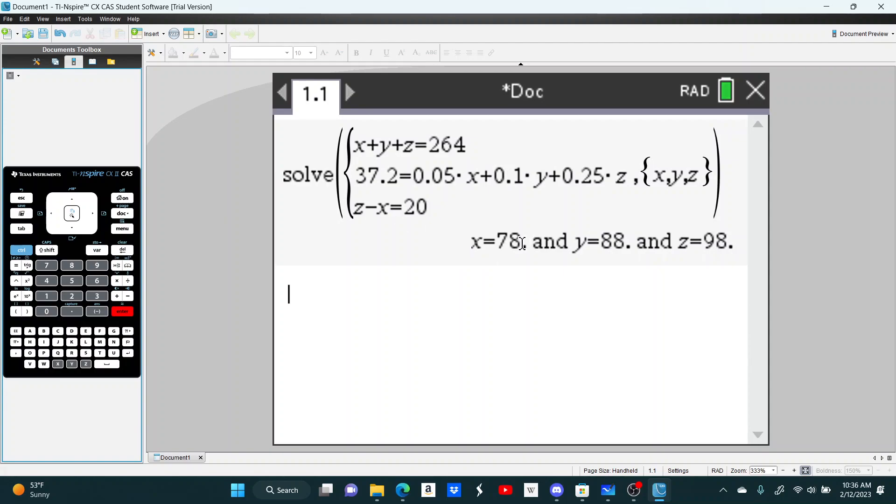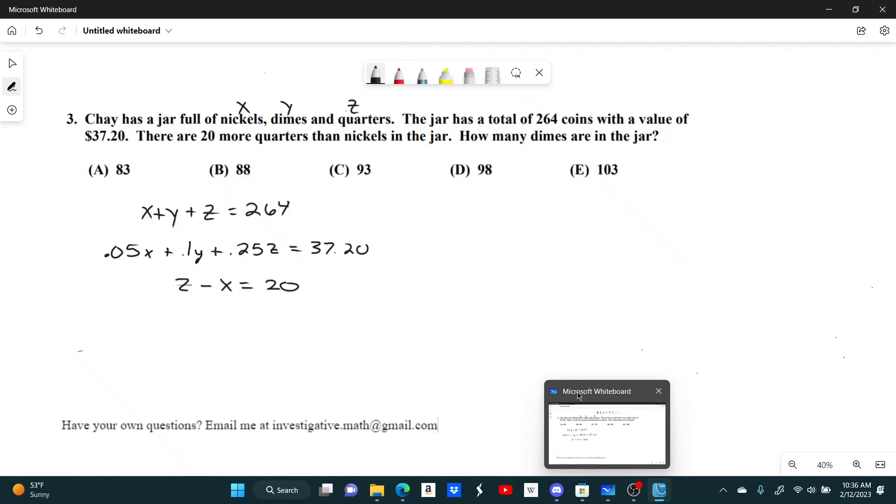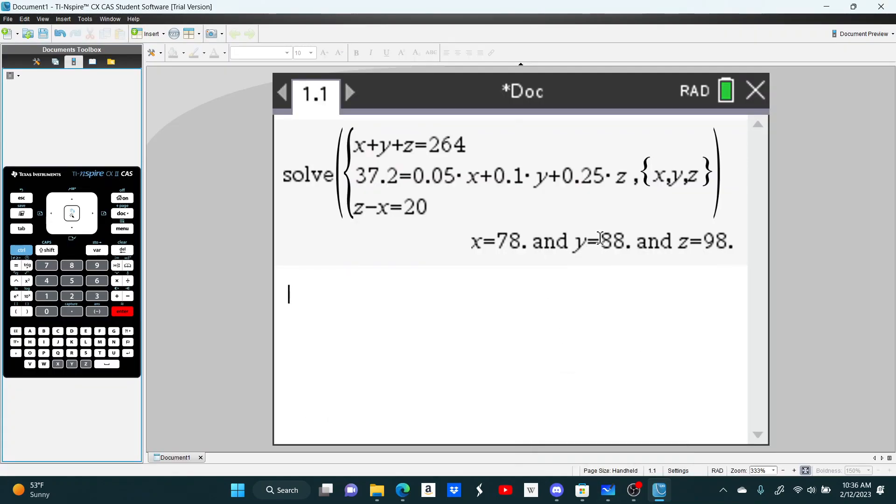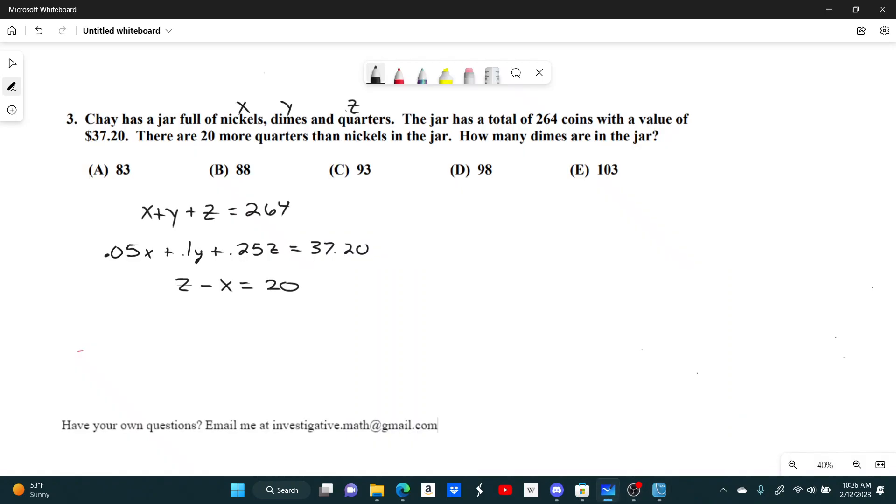We get 78 nickels, 88 dimes, and 98 quarters. What did they ask for? Just how many dimes. So y is 88, which means we have 88 dimes. Yep, that's answer choice B.